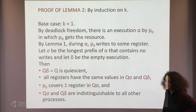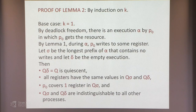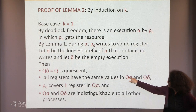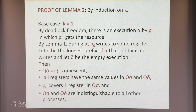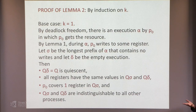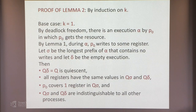Since Q is quiescent and delta is the empty execution, Q-delta is quiescent. All registers have the same values in both configurations because during sigma there weren't any writes. P0 covers one register in Q-sigma because we let it run until it's just about to write. Q-sigma and Q-delta are indistinguishable to all other processes — nothing else has been written or taken steps. That's the easy base case.